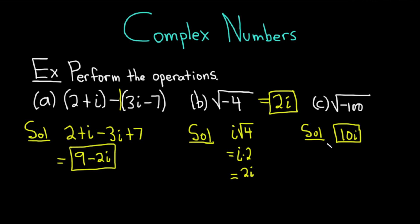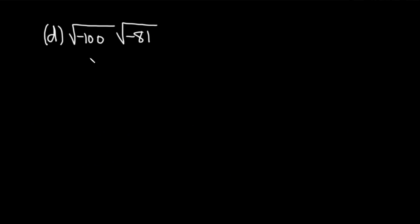Let's keep doing examples. Part d: we have the square root of negative 100 times the square root of negative 81. This one is a little tricky. It's very important that when dealing with complex numbers and you see a negative inside the root, you immediately convert to i's. You're not allowed to multiply these square roots directly when both numbers under the roots are negative.